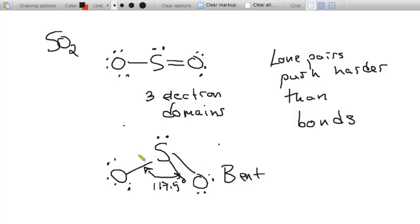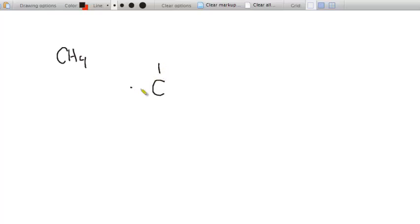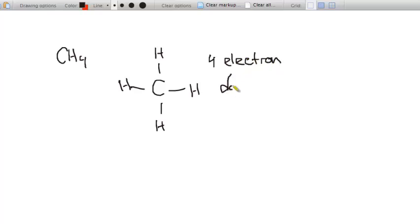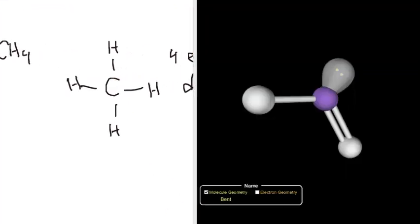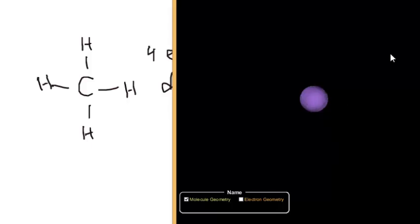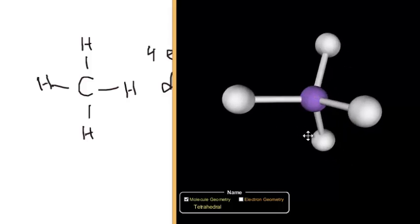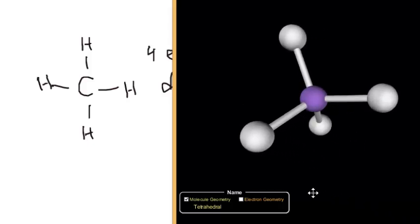If we increase the number of domains to four, here's methane. Its Lewis structure looks like a cross — a 90-degree bond angle, all five atoms flat in the same plane. But that doesn't make sense, because with four bonds on the central atom we have four electron domains. In two dimensions they'd be 90 degrees apart, but in three dimensions they can push much farther apart.